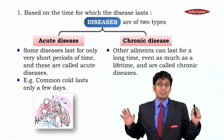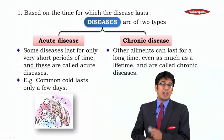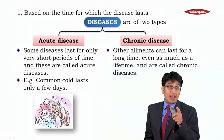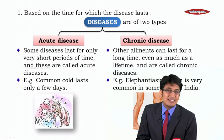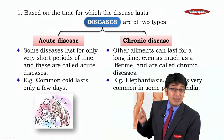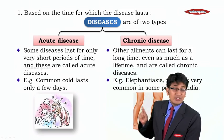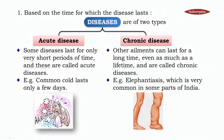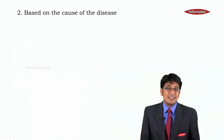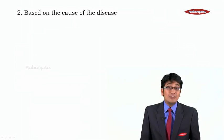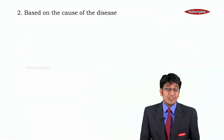Chronic diseases are ailments which can last for a long time, even as much as a lifetime. These are called chronic diseases. For example, elephantiasis — a very common disease in some parts of India, especially Kerala — is a very dangerous chronic disease.